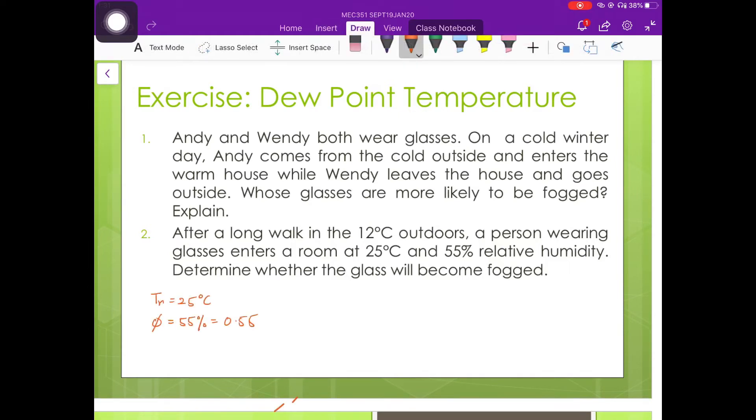In order to solve this, we need to determine the dew point temperature for the room. Given in this example is the room temperature, 25 degrees Celsius and also the relative humidity, 55%. The formula to find the relative humidity is given by phi is equal to Pv divided by Pg.